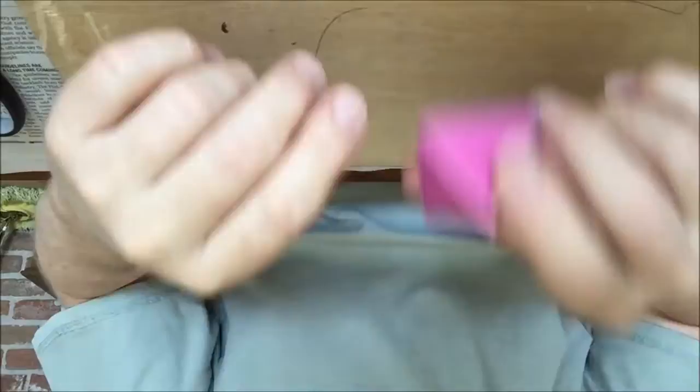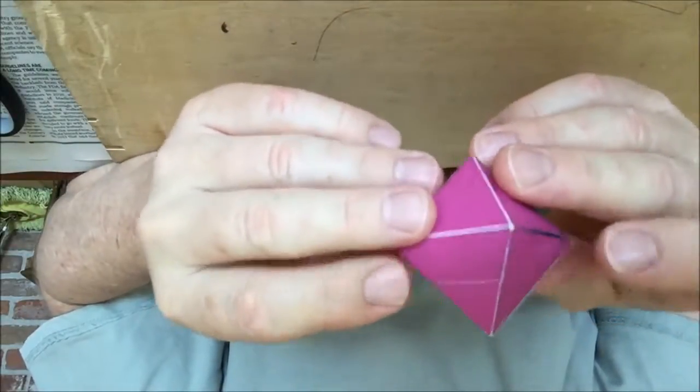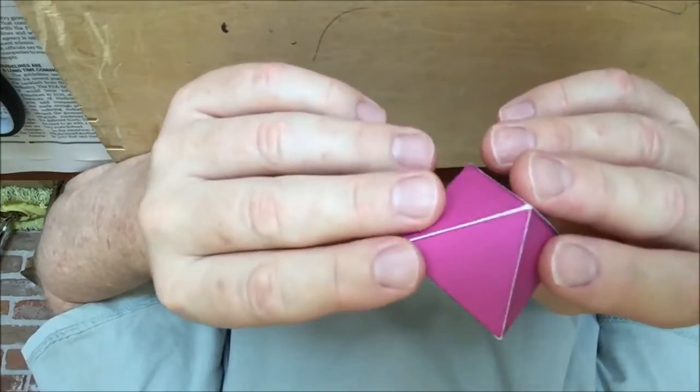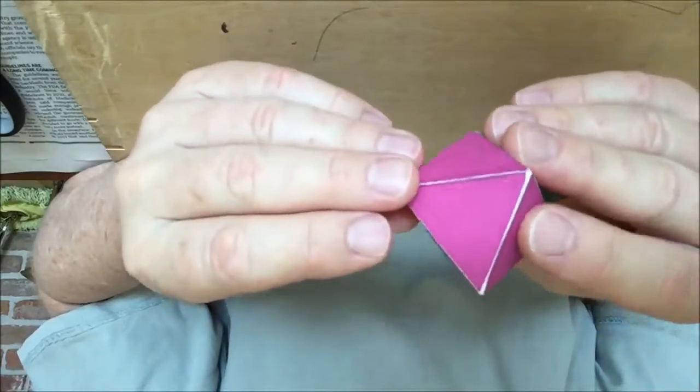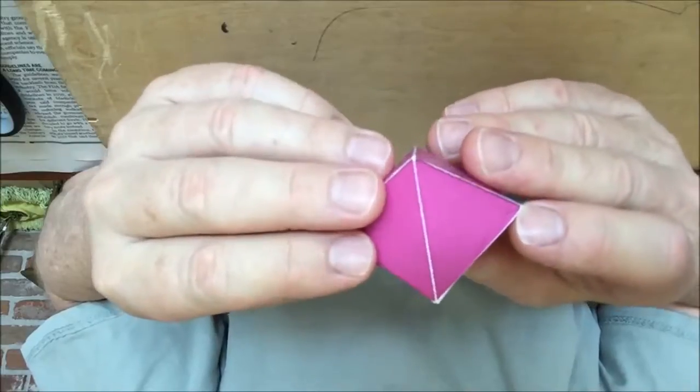This video shows how to make the regular octahedron as part of the nested set of Platonic solids. Like the tetrahedron, the octahedron is made up of equilateral triangles. Octa means eight, so it has eight equilateral triangles.